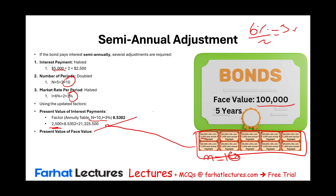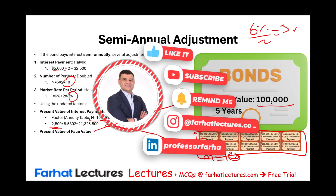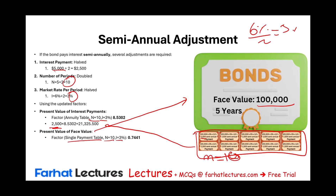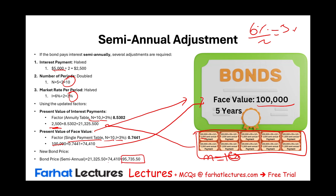We still need to find the present value of the face value. Using the same n=10 and i=3% but with the single payment table, the factor is 0.7441. Therefore $100,000 times 0.7441 gives $74,410 for the face value component. Combining both components, the total price of the semi-annual bond is $95,735.50 — the present value of the coupon payments plus the present value of the face value. That's the beauty of the bond: it has a single payment component and a series of payments component.